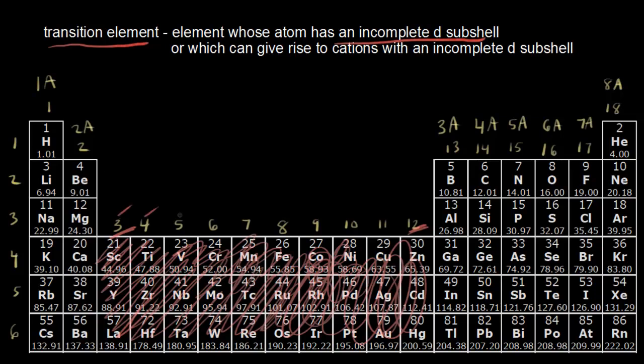So 10. So one, two, three, four, five, six, seven, eight, nine, 10, for our d block. So let's go ahead and write an electron configuration for a transition metal, and let's see how that applies to our definition from IUPAC.